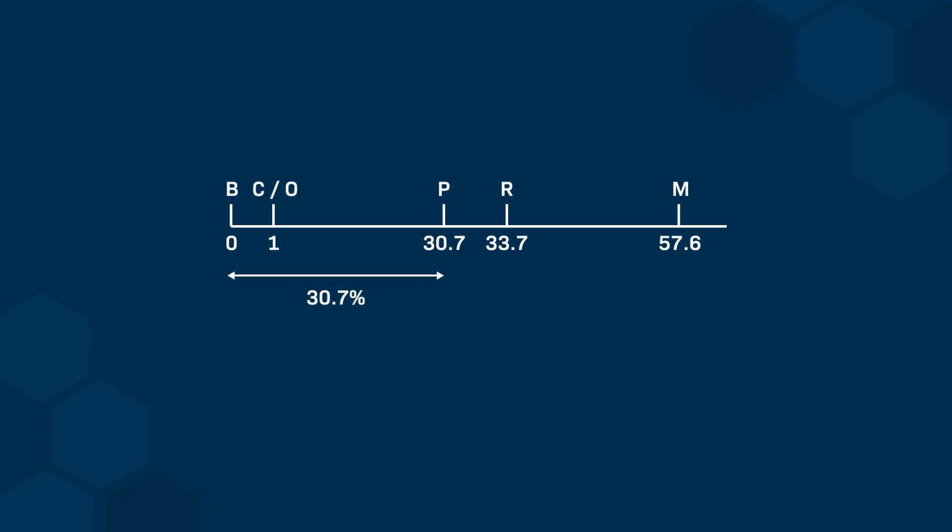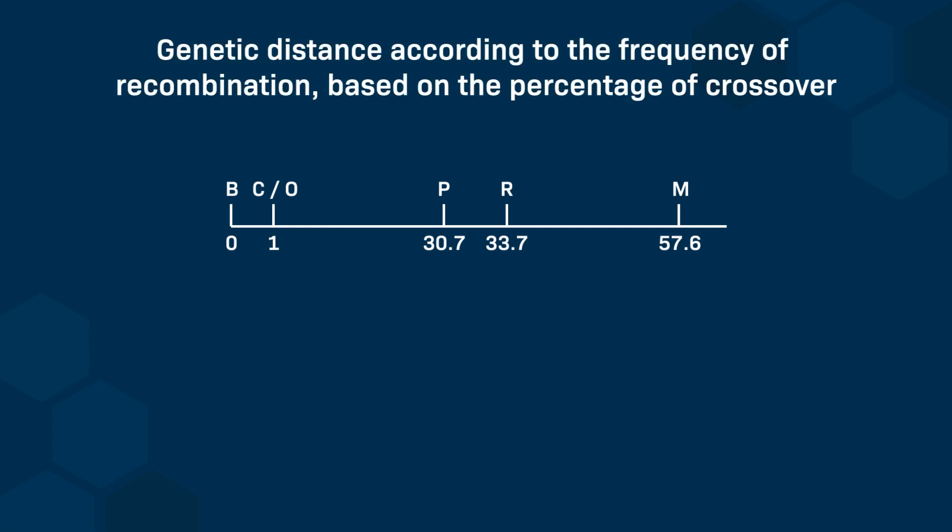We can see there is a recombination frequency of 1% between alleles B and C. Looking at alleles C and P, there is a recombination frequency of 29.7%. Morgan also did control crosses between alleles B and P, getting a recombination frequency of around 30.7%, which confirmed the previously calculated distance. This established a genetic map based on recombination frequency that positions these six alleles along the X chromosome. These positions don't represent actual physical distance, but rather genetic distance based on the percentage of crossover.